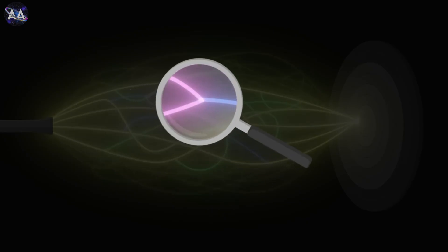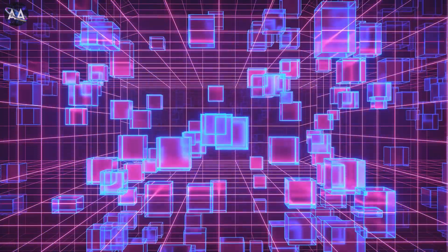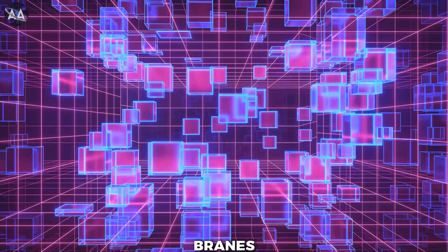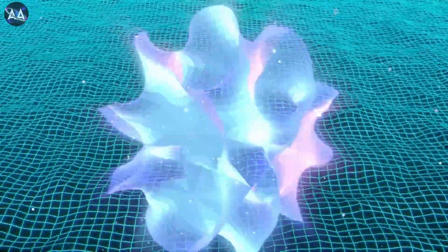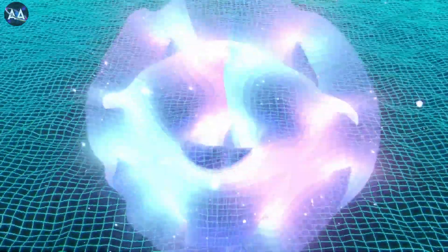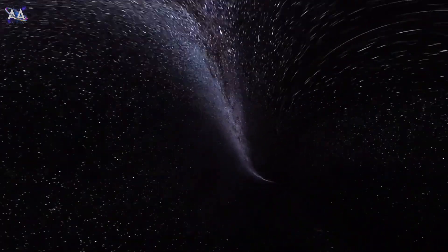It suggests that strings aren't just one-dimensional objects. They might also be two-dimensional surfaces or even higher-dimensional objects called branes. M-theory also predicts the existence of an eleventh dimension, which could open up even more possibilities for how the universe works.